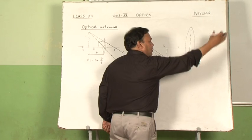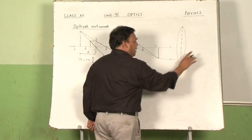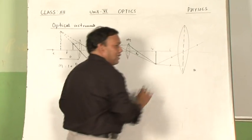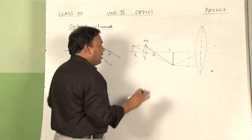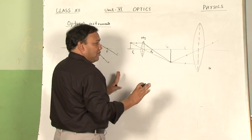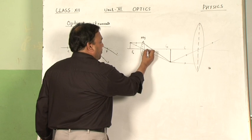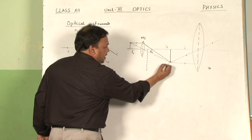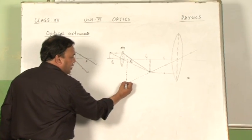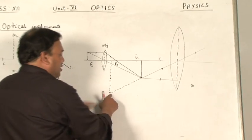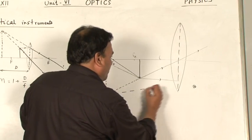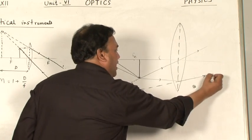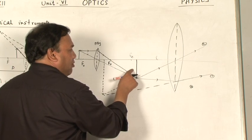After refraction, take the second ray which is passing through the center of the second lens - that is the eye lens - it goes undeviated. Now, fix the position of the final image, it can be here. First fix this image position, then extend this ray backwards. Join this point with this point and extend it - this is the first ray and this is the second refracted ray in this particular case.